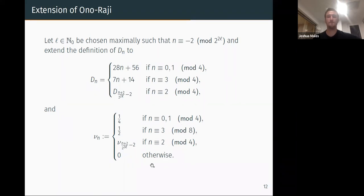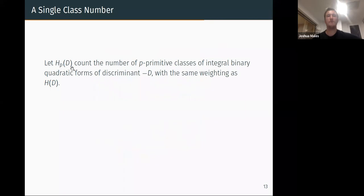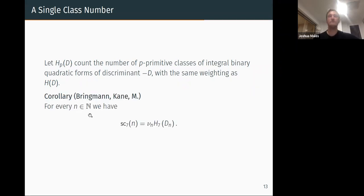In terms of a single class number, we let H_p count the number of p-primitive classes of integral binary quadratic forms. What does that mean? Here p is some prime, and primitive means that prime p does not divide all of the coefficients of our quadratic form. So Q is (a,b,c), some quadratic form, and p does not divide their gcd, and it comes with the same weighting as a normal class number. Then for every n we have this I think quite beautiful formula: the number of self-conjugate seven-cores is just up to some factor the number of seven-primitive binary quadratic forms of some discriminant depending on n.